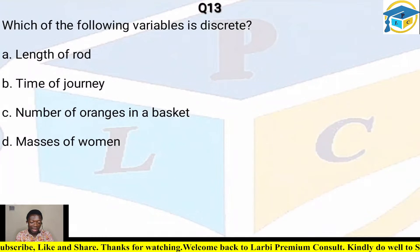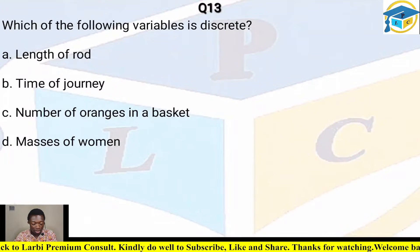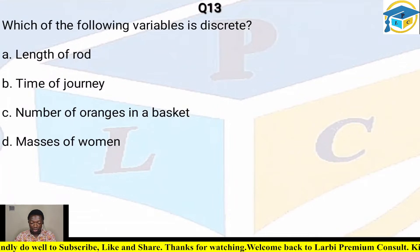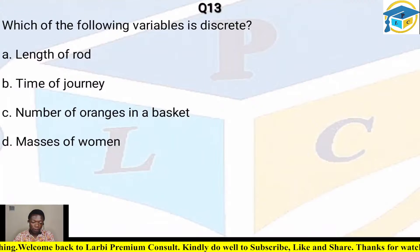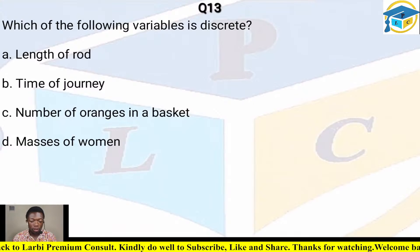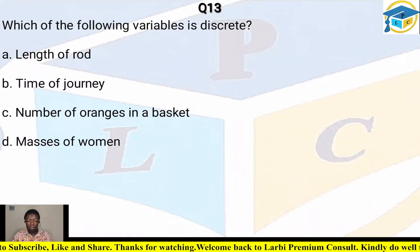Question thirteen (labeled 18 in the session): which of the following variables is discrete? Options: length of a rod, time of journey, number of oranges in a basket, masses of women. Discrete data is countable. The correct answer is C — number of oranges in a basket.